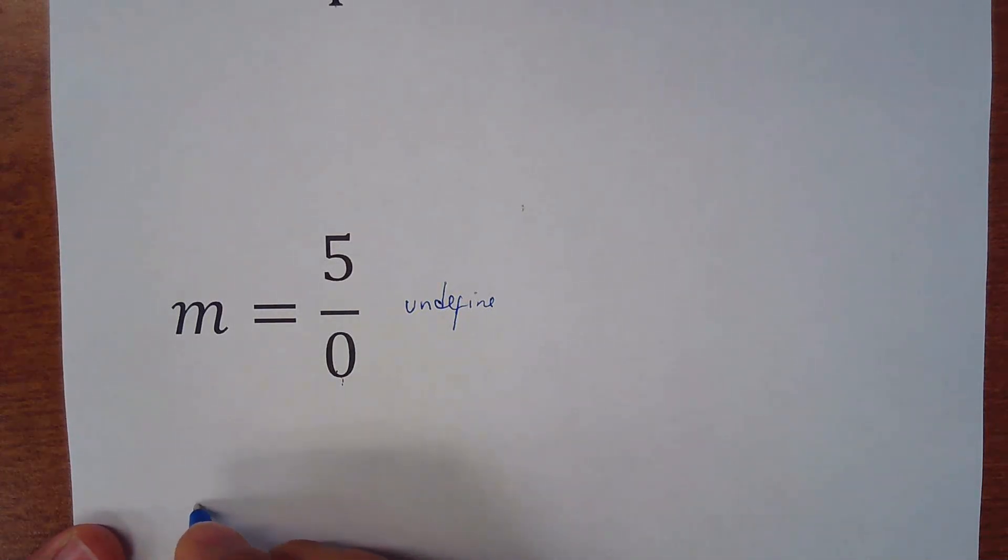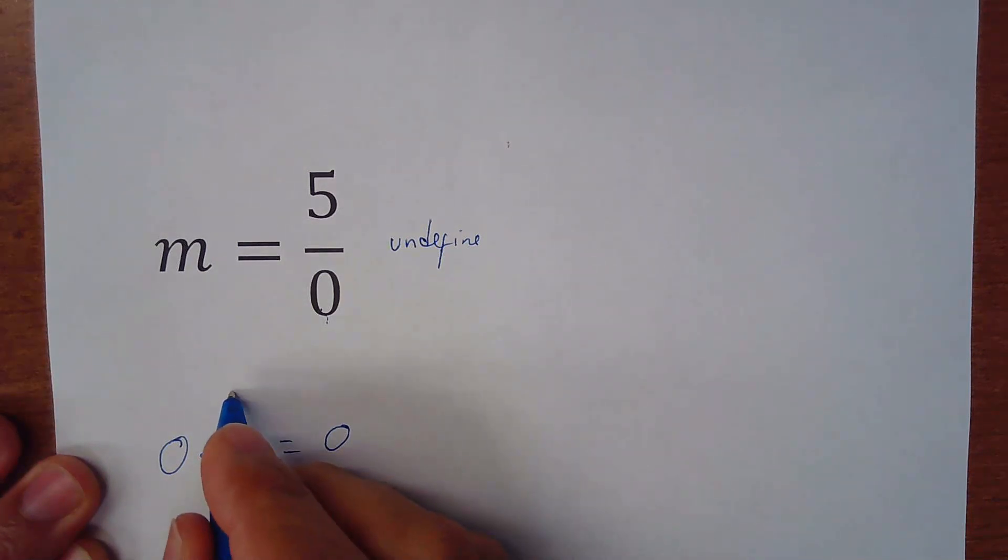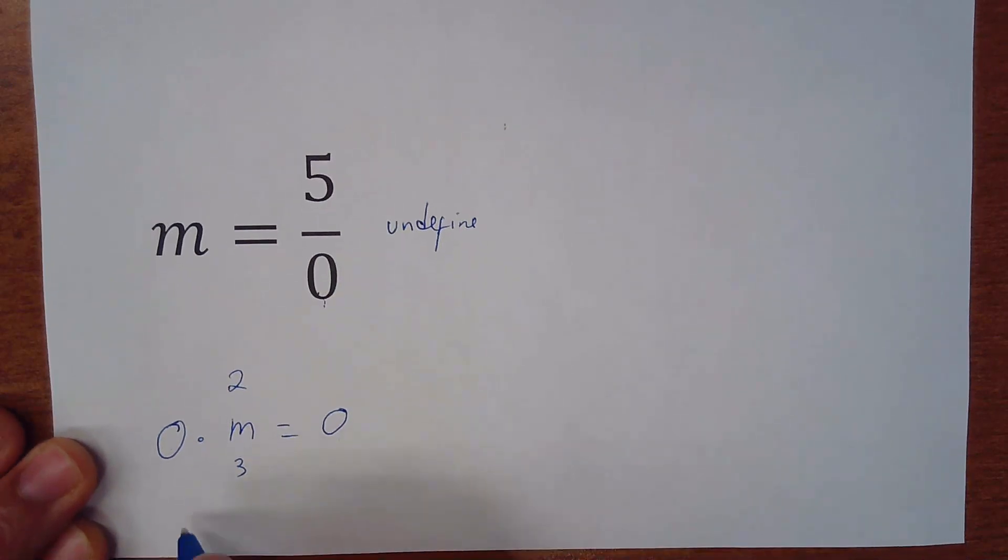Unless you have zero times m, it's equal to zero. So that means if m is equal to two, zero times two equals zero. If m is equal to three, zero times three equals zero. If m is equal to 27, zero times 27 is equal to zero.